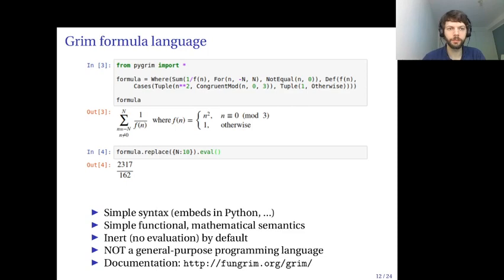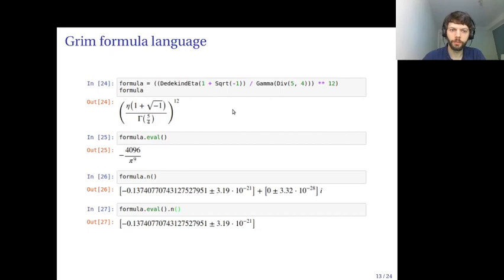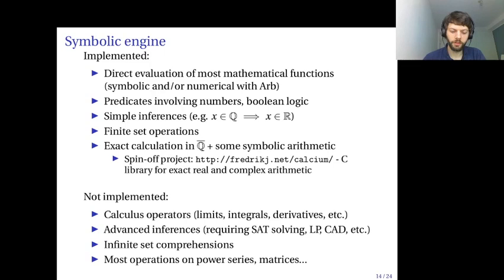Here's another example of some formulas. It's a formula of the Dedekind eta function. You can evaluate it symbolically. You can call the n method to get a numerical enclosure computed using Arb. This is for the evaluated version. You can see that these enclosures agree. So it's a check that this formula is valid.